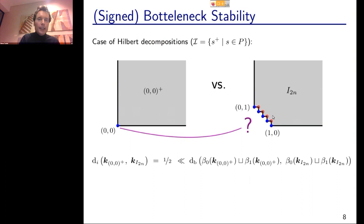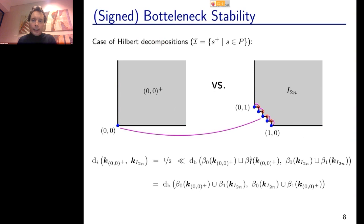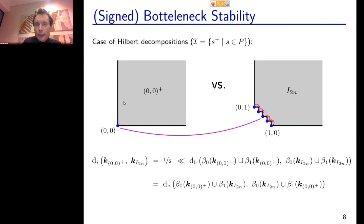The way around this follows the one-parameter idea: instead of all Betti numbers of one module on one side, you mix up the Betti numbers. Betti numbers in even degree from the first module and odd degree from the second module go on the left side; and symmetrically for the right side. You take relations from the second module and associate them with the first module. Now you can get many more matchings and actually get a finite distance equal to the interleaving distance. This defines a signed version of the bottleneck distance.